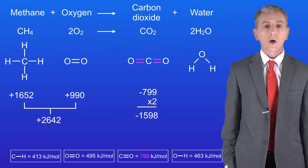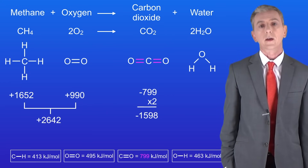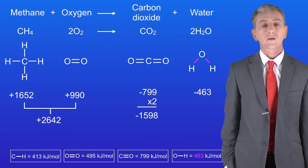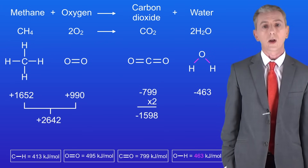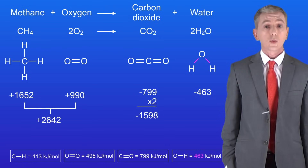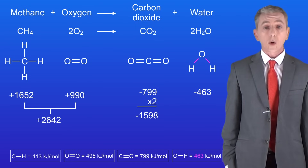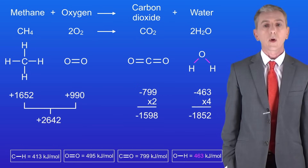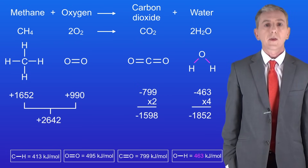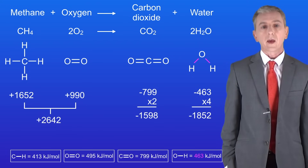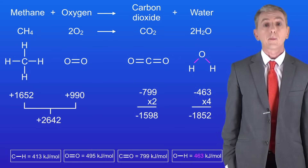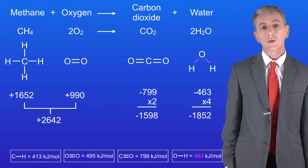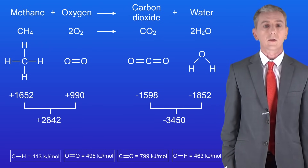Next we're going to make the oxygen to hydrogen bonds in water. The bond energy of an oxygen to hydrogen bond is 463 kilojoules per mole and we've got two of these bonds in each molecule of water. However, we've got two water molecules so we've got four of these bonds in total. Multiplying 463 by 4 gives us a total of 1852 — remember this has to be negative as we're making these bonds. Adding together minus 1598 and minus 1852 gives us a total of minus 3450.